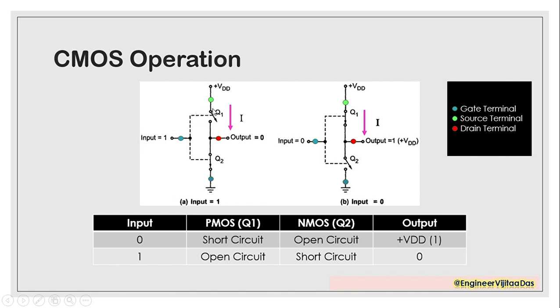That means it will become open circuit for PMOS, and for NMOS it will become short circuit. So the output will be zero. When we are giving input as 1, we are getting output as 0.